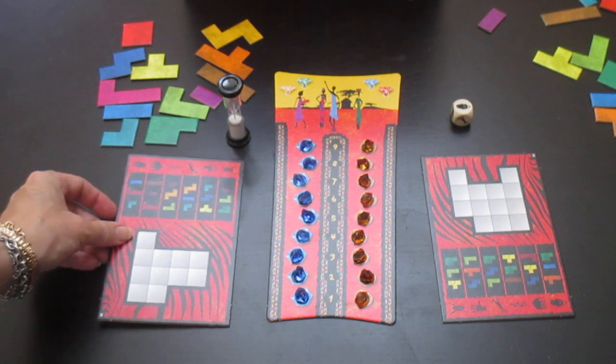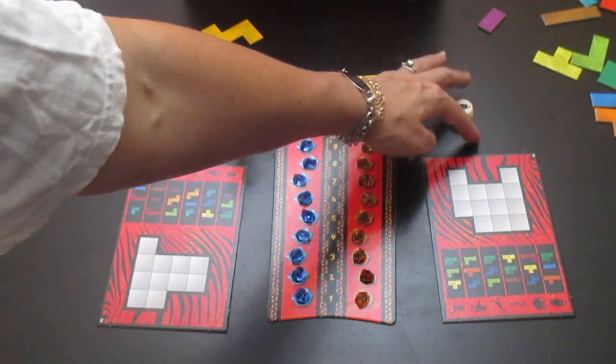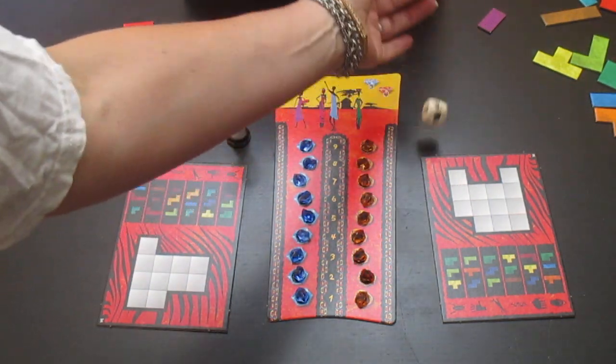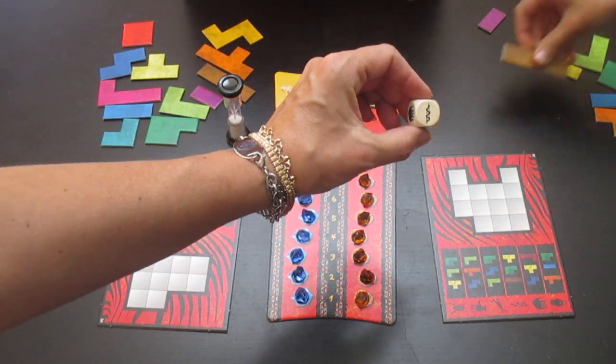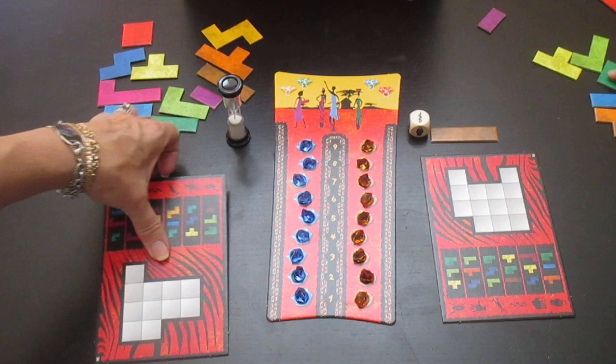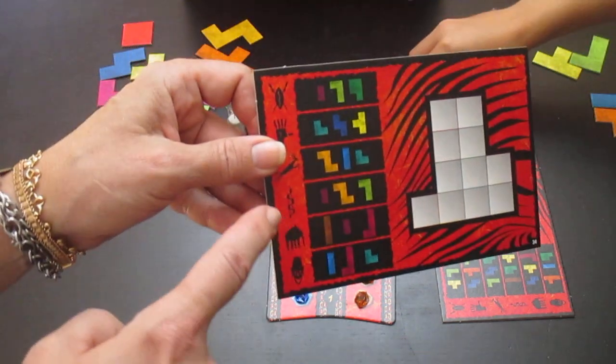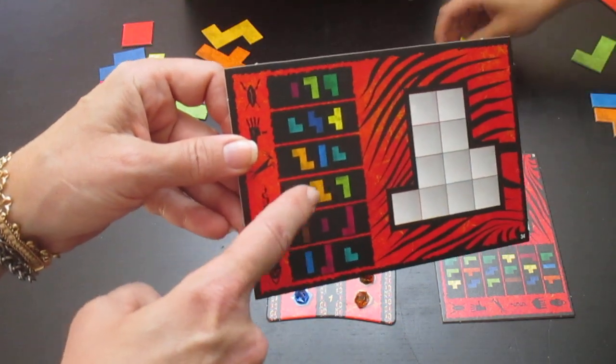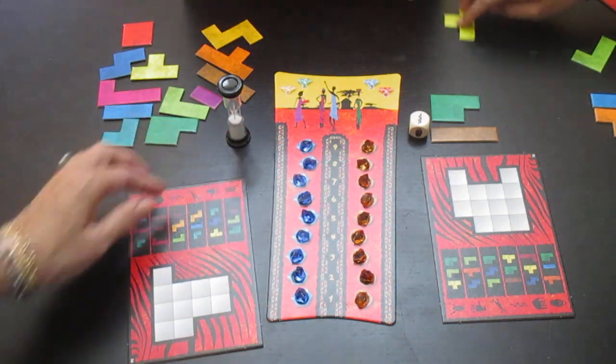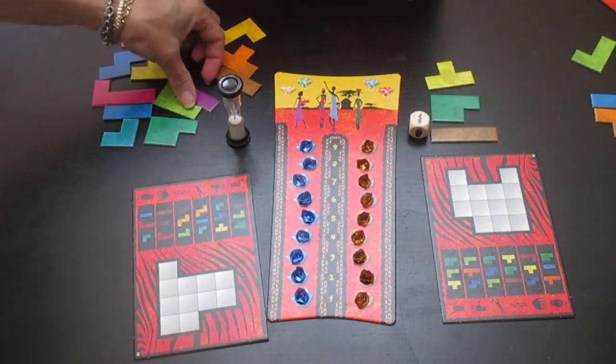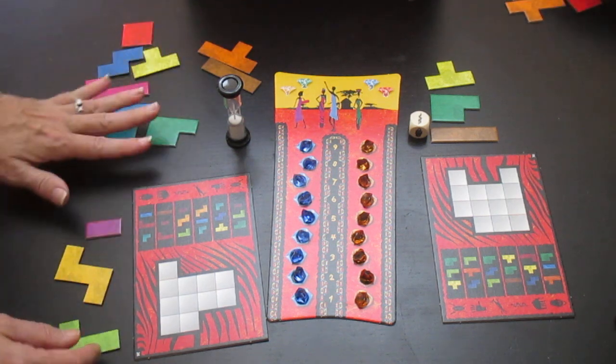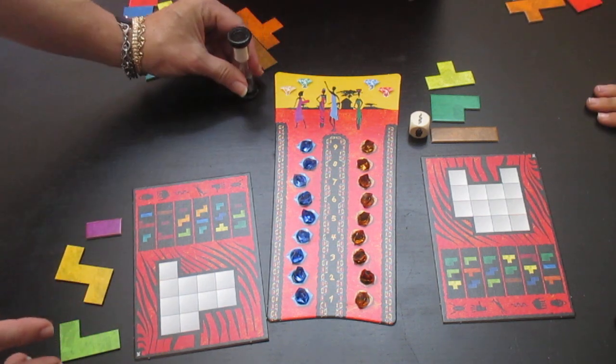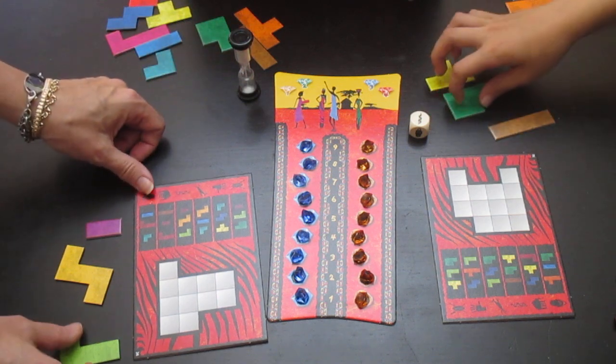So let's do a round and see how it happens. The first thing we do is we roll our dice. In this case our dice came up to be a snake. If you look on all the boards, every board has a snake and it says I need these three pieces. So I am going to pull these three pieces. This one, this one, and this one.